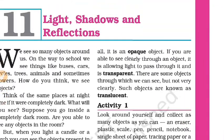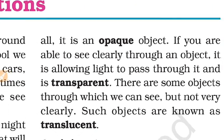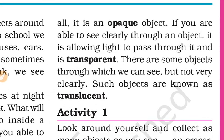Next, let's look at two things: opaque objects and transparent objects. A transparent object allows light to pass through clearly and you can see a clear image through it. For example, glass is a transparent object — like a car windshield.